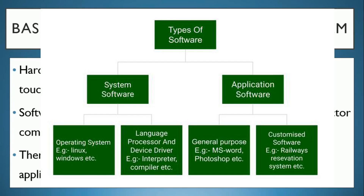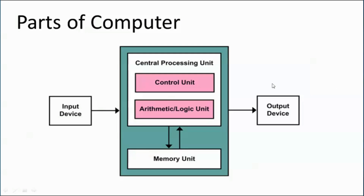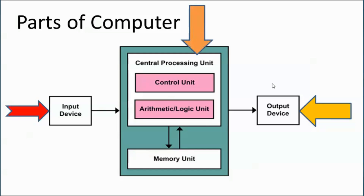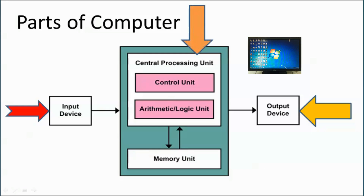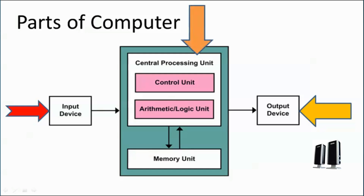The parts of a computer include three units: input unit, output unit, and central processing unit. The input unit is where we provide input using the keyboard and mouse. The output unit displays information — that includes the monitor, printer, webcam, headphones, and speakers.